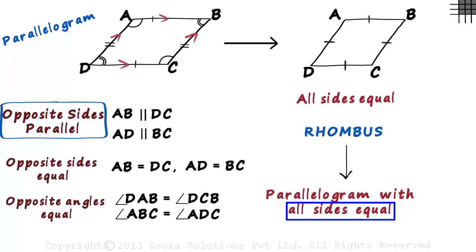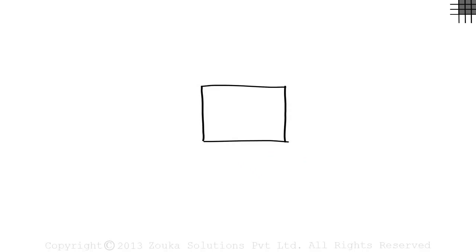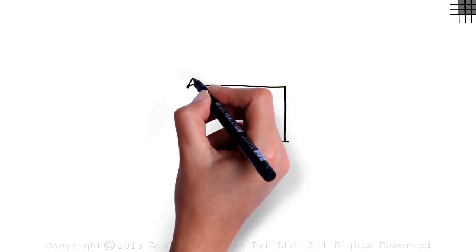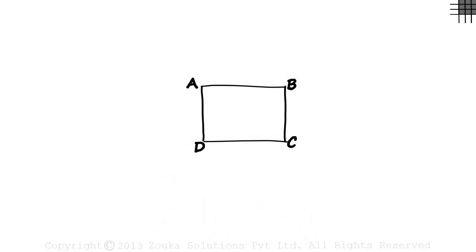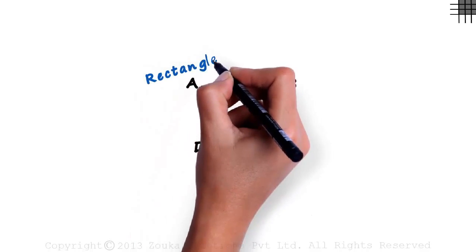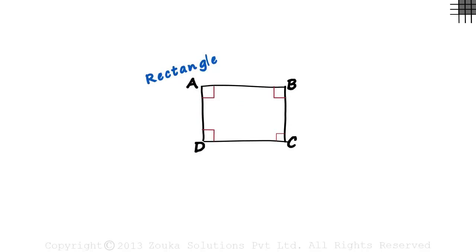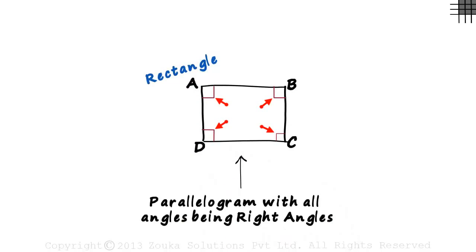There is another special case of a parallelogram — let me draw it on a new page. The opposite sides have to be parallel. It is a quadrilateral drawn like this, and the opposite sides of this quadrilateral are parallel, so it is a parallelogram. Let's name the quadrilateral ABCD.